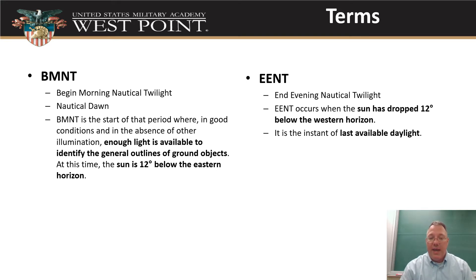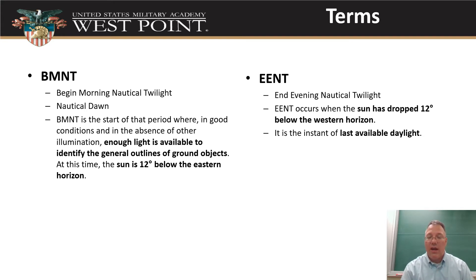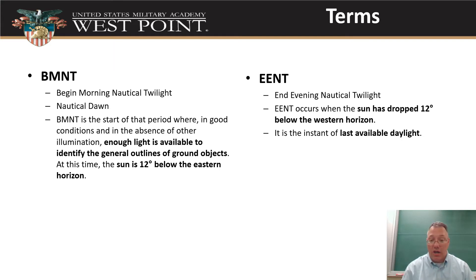Then we have EENT, which is End Evening Nautical Twilight. This is the reverse of BMNT on the other side. After sunset, there's still some light out. Until the sun drops 12 degrees below the horizon, that's our last available daylight. So from sunset up until EENT, there's still some light out and we can still see things enough to identify what's on the ground. After EENT, it's dark.